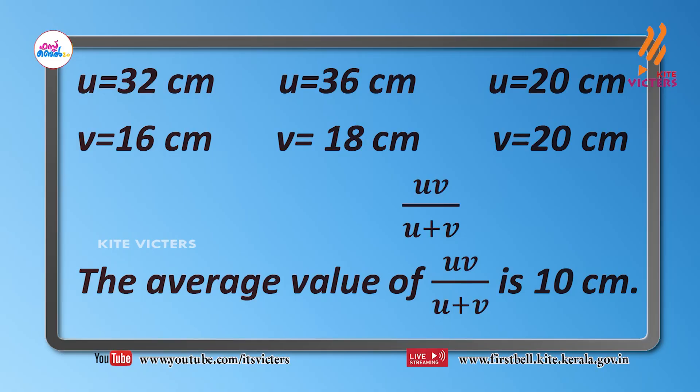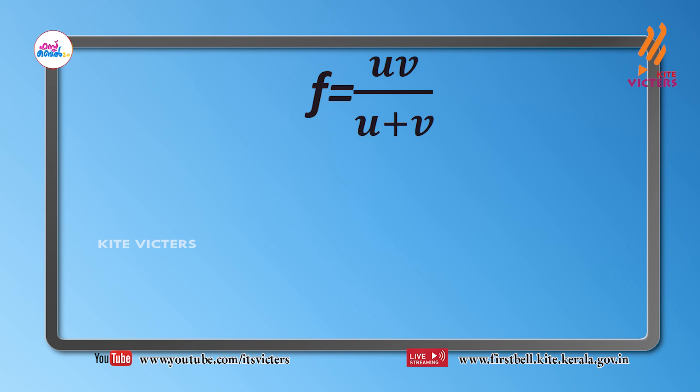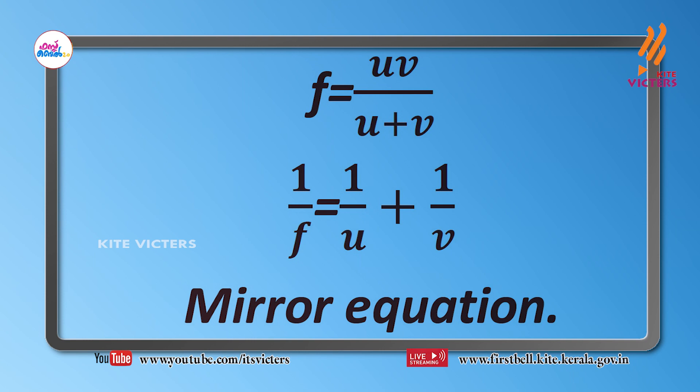We can conclude that the focal length equals UV divided by U plus V, which is known as the mirror formula. Rearranging, we get: 1/F = 1/U + 1/V. This is known as the mirror equation.